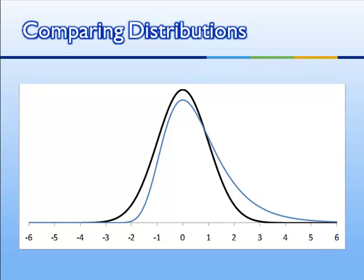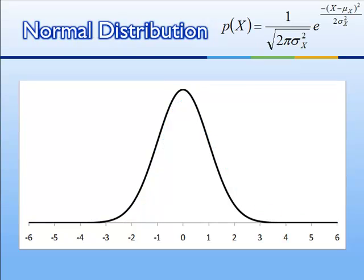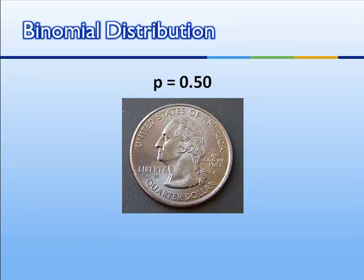If we're going to use the normal distribution as the basis for comparison to all other distributions, we have to ask ourselves, why the normal distribution? What's so special about it? One way to think of the normal distribution is in terms of its probability density function. There's some really interesting things about this equation, but it's a bit intimidating, and there are other ways of thinking about it. One way is to consider how it arises.